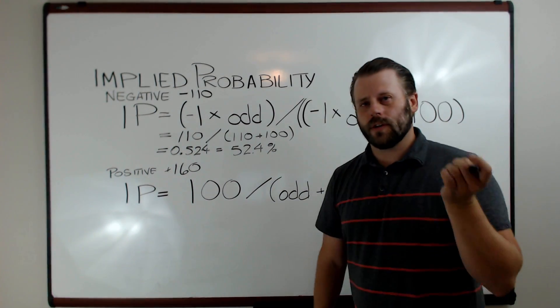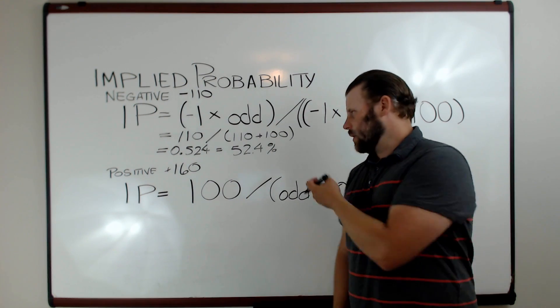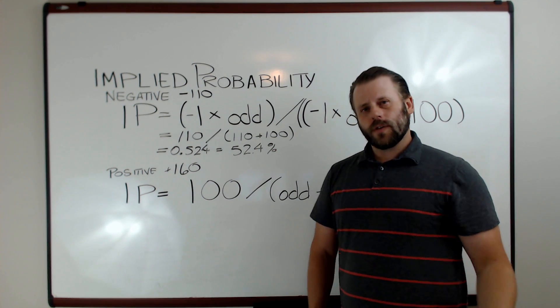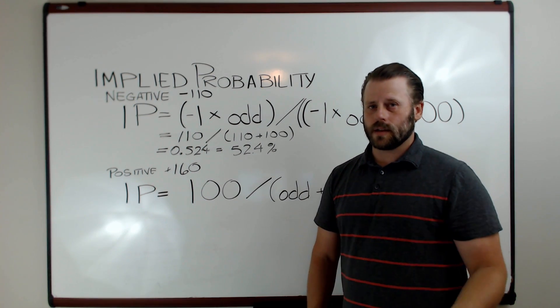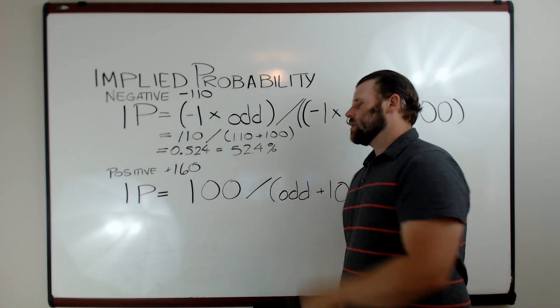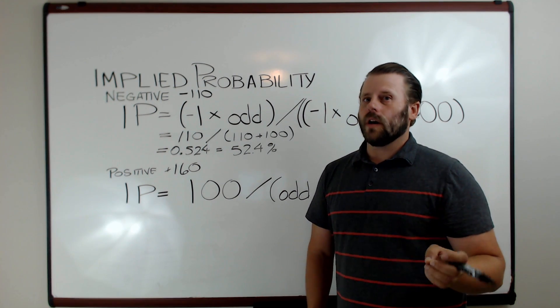Now that number should be familiar to you. If you've seen any of my other videos, essentially this is the break-even point. If you're a minus 110 general against-the-spread bettor, this is the winning percentage that you need to win at to break even on your sports bet.